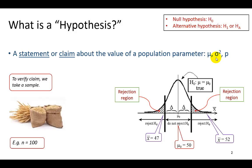To verify the claim, what we're going to do is take a sample. As an example, suppose some agricultural firm claims that a bag of wheat it produces weighs 50 pounds. So 50 pounds represents the hypothesized value — the claim made by this firm. Now on the other hand, some consumer group isn't convinced about the claim, and so to verify it, the consumer group takes a sample of let's say a hundred bags of wheat produced by this firm.